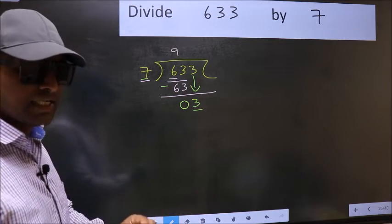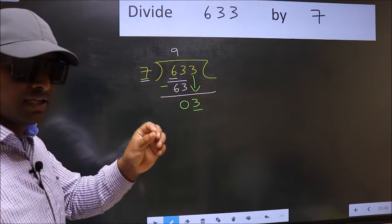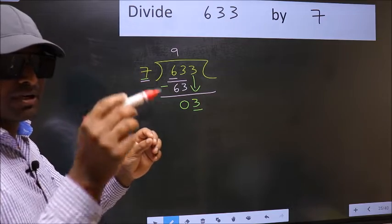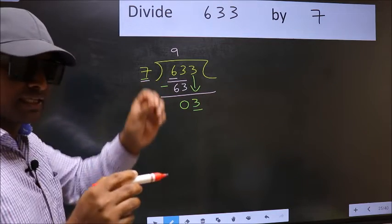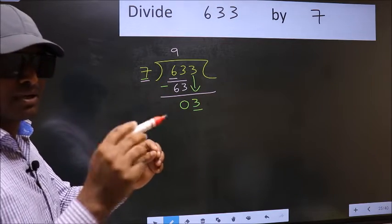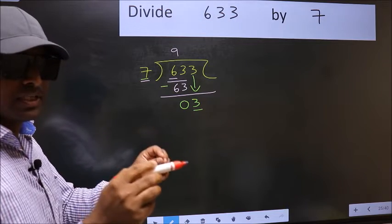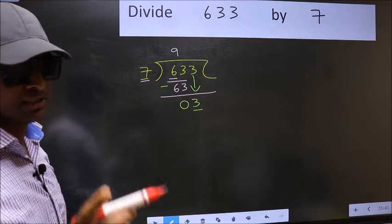I repeat: bringing the number down and also put dot take 0, both at the same step, you should not do.